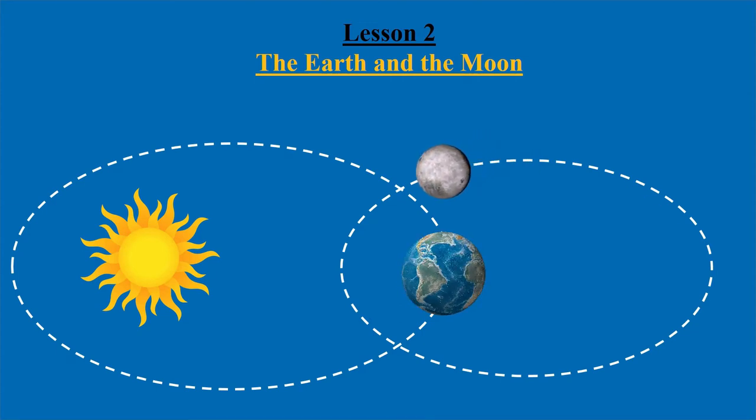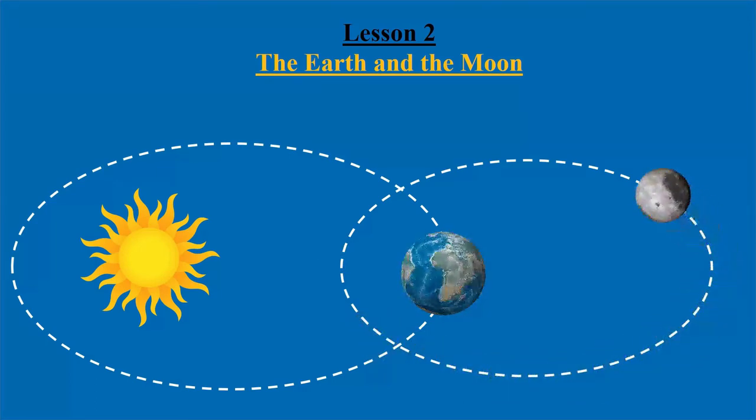The Moon is the only natural satellite of the Earth. The Moon revolves around the Earth and rotates on its axis.